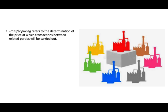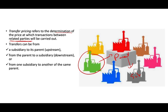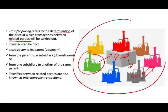Transfer pricing refers to the determination of the price at which transactions between related parties will be carried out. The related parties could be a subsidiary and a parent. The subsidiary could sell something to the parent, which is called an upstream sale; a sale from the parent to another subsidiary is a downstream sale; or it could be a sale between the subsidiaries themselves. All of these transactions are known as related party or intercompany transactions because they are within the same parent company.